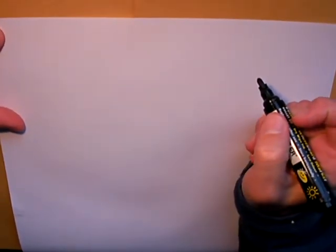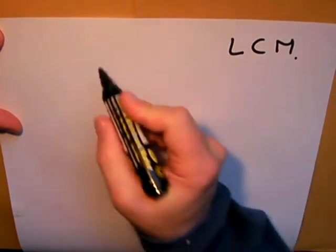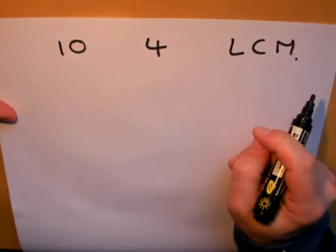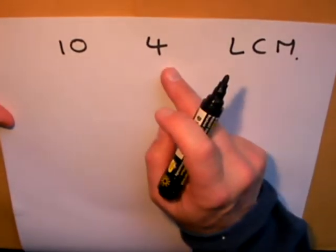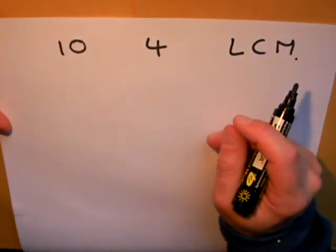The next example I'm going to do is finding the lowest common multiple of 10 and 4. Again, same way, I can work through the 10 times table and the 4 times table to see if I can find a common multiple.